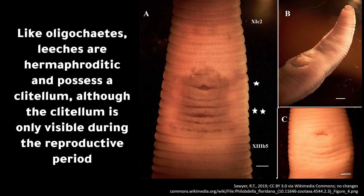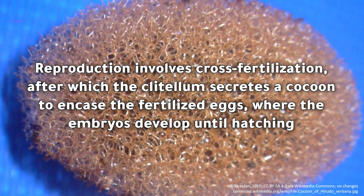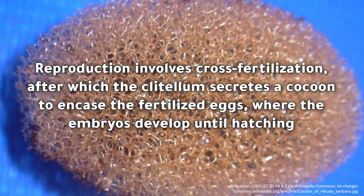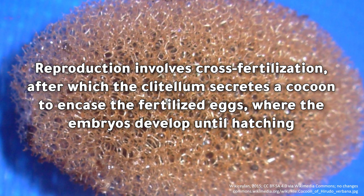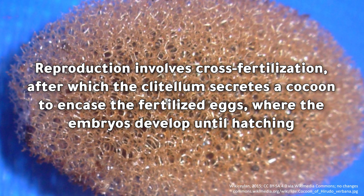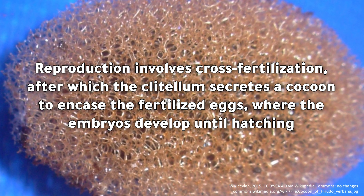Like oligochaetes, leeches are hermaphroditic and possess a clitellum, although the clitellum is only visible during the reproductive period. Reproduction involves cross-fertilization, after which the clitellum secretes a cocoon to encase the fertilized eggs, where the embryos develop until hatching.